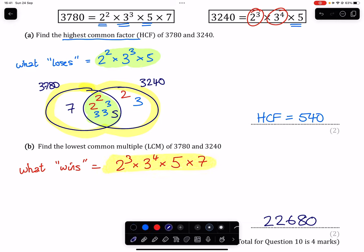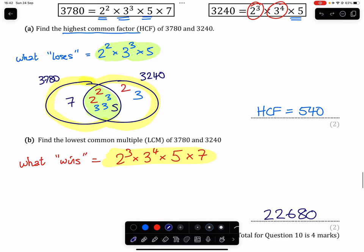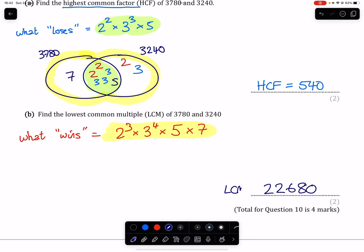If we have a look, we have our 3 2s. They are all shown in red. We have our 4 3s. They're all shown in blue. We have a single 5, and we have a single 7. And that, again, will give us a lowest common multiple of 22,680. Done.